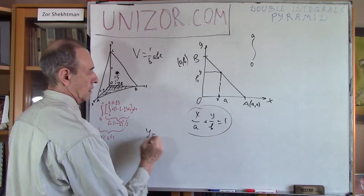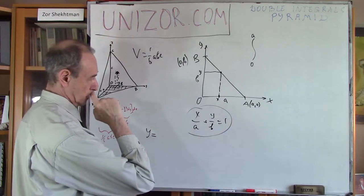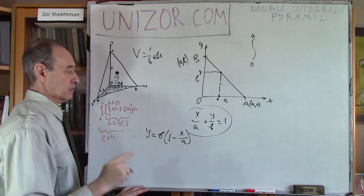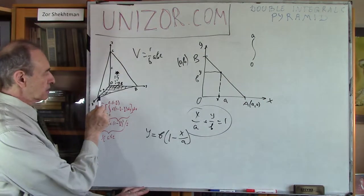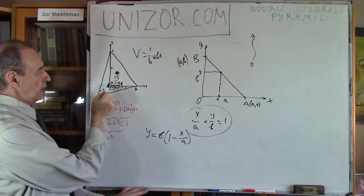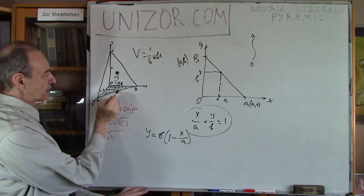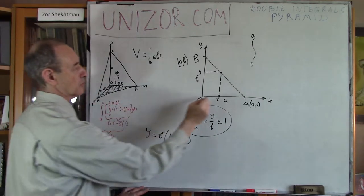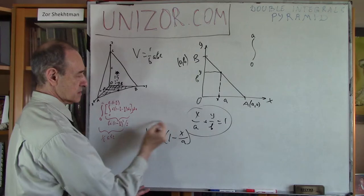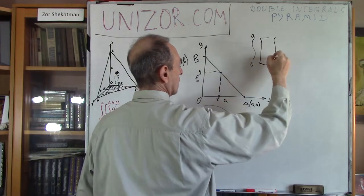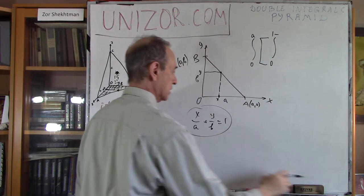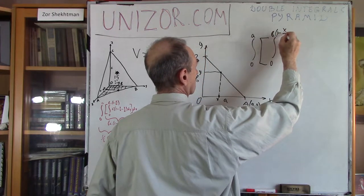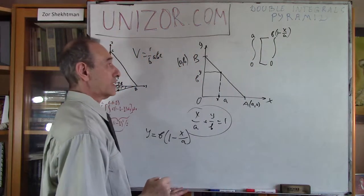From this equation I can find y very easily. So what is y? It's b times (1 - x/a). So my point right now is that I have to integrate by x from 0 to a, but for integration by y, I integrate only from 0 to the point where it intersects this line — that is, from 0 to b(1 - x/a). That would be my integration by y.